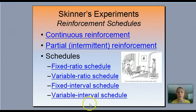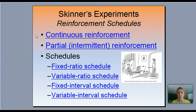There are two different types: continuous and partial. Continuous reinforcement means that every single time the behavior you want is exhibited, you reinforce it. So if I want the rat to press the lever, every time he presses it, he gets food — that's continuous. A partial reinforcement is called intermittent — this is when it's not every time, but like every 10 times the rat presses the button, he gets food.